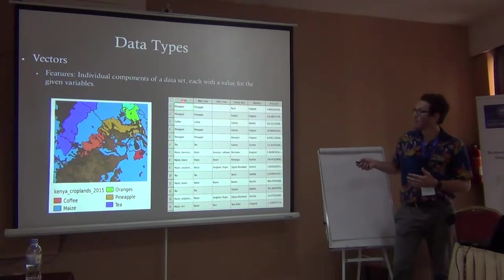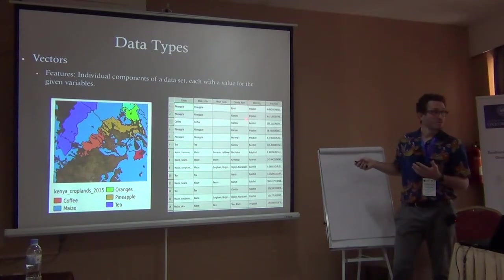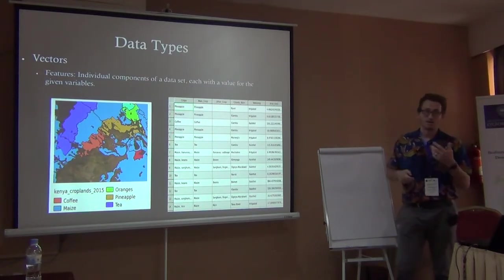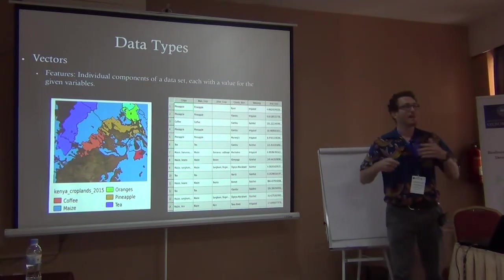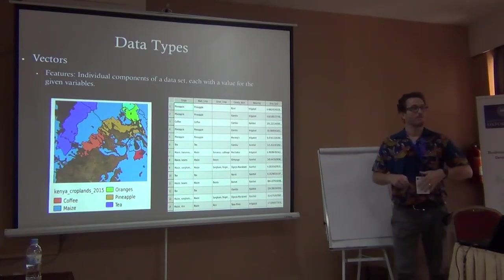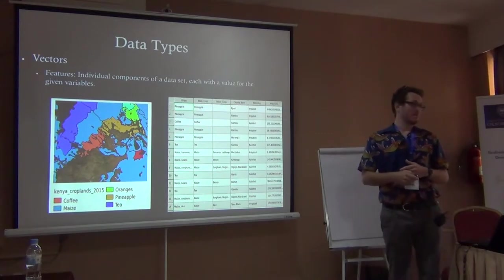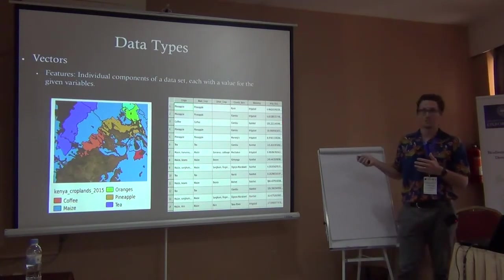In this case, we know this is a pineapple area, the county is Nyeri, it's irrigated water so it's not rain fed, and we have the area in square kilometers. We could also have whether it's Maasai land, whether it's owned by the government — we could have an infinite number of variables in this feature table.